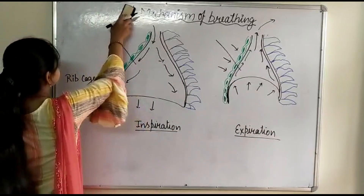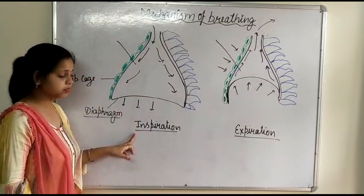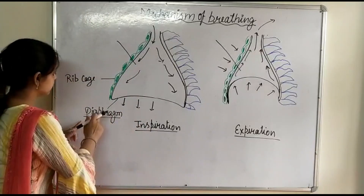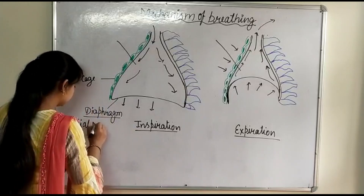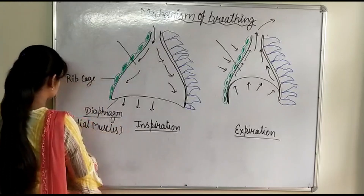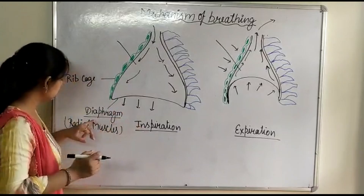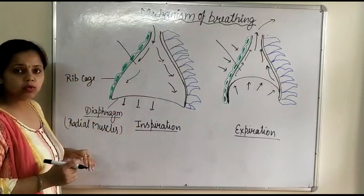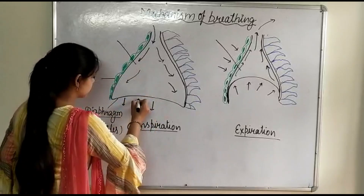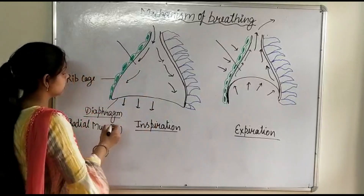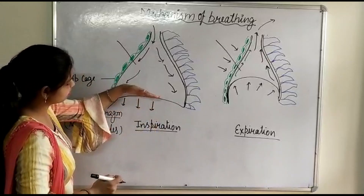During inspiration, the muscles of the diaphragm — called radial muscles — contract. Due to contraction of the radial muscles, the diaphragm is pulled downward. Normally, the diaphragm has a dome shape, but when its muscles contract, the diaphragm becomes flat.